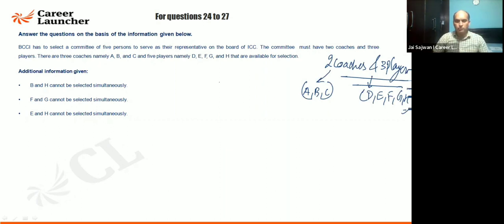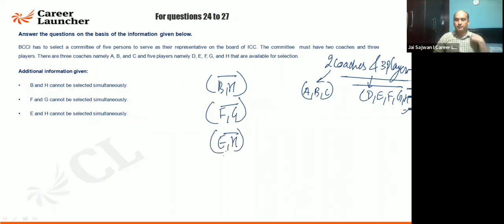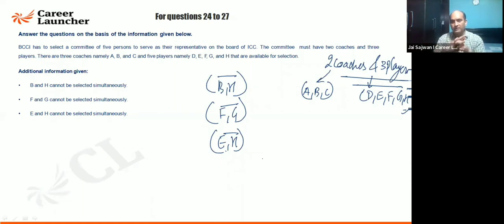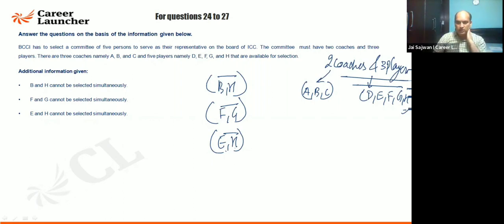The constraints are: B and H cannot be selected together. F and G cannot be selected together. E and H cannot be selected together. So two coaches need to be selected from A, B, C and three players from D, E, F, G, H.